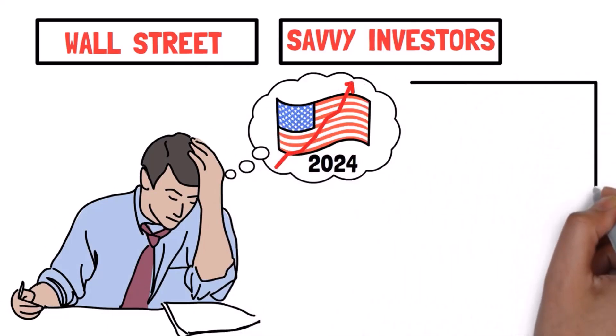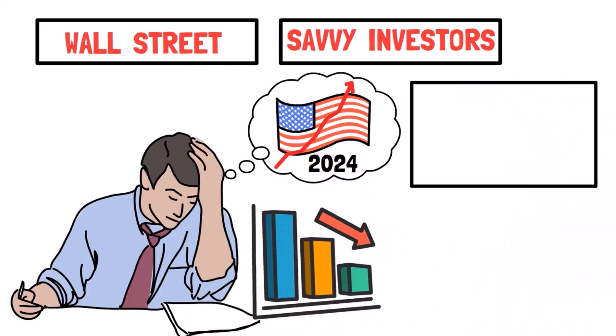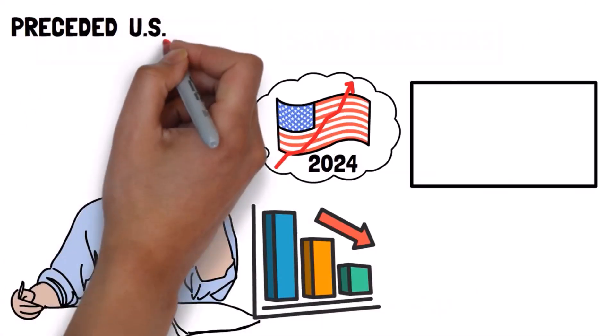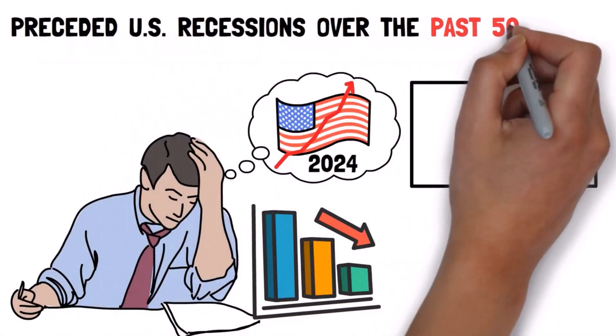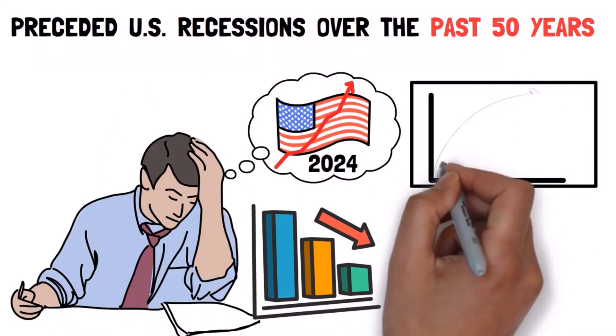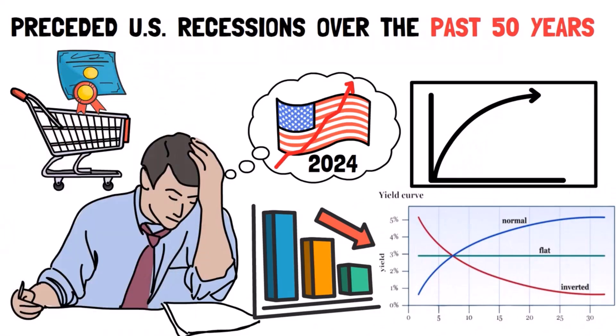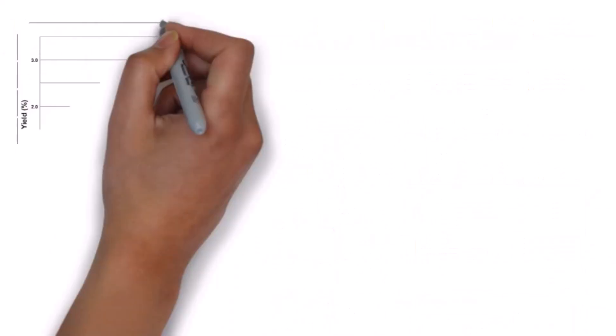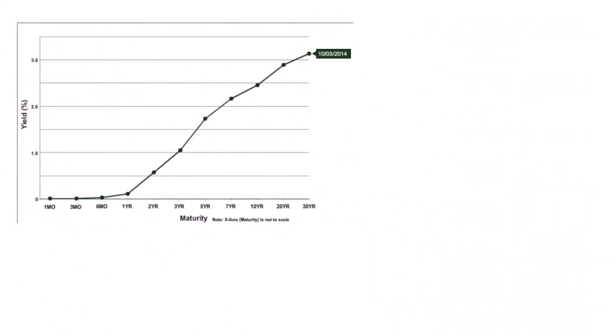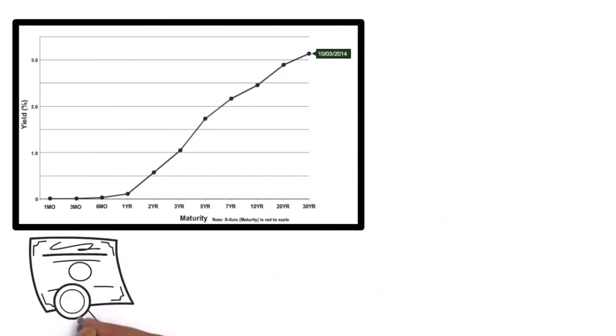There's another thing that is commonly considered an indicator of a recession and has preceded US recessions over the past 50 years. I'm talking about a simple line called the yield curve, which shows what happens when you buy a US government bond. In particular, it shows the different interest rates you would get based on how long you intend to hold the bond. For example, if you hold the bond for five months or five years, the interest rate changes.